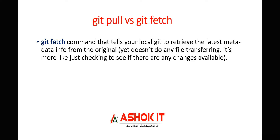The git fetch command will tell you whether there are any updates in the git central repository. You will have your local repository and GitHub will contain our remote repository. When you execute the fetch command, it will check if there are any new changes in the remote repository which are not available in our local repository. Git fetch is like a notification command — it is not going to download any changes from the central repository to our local.